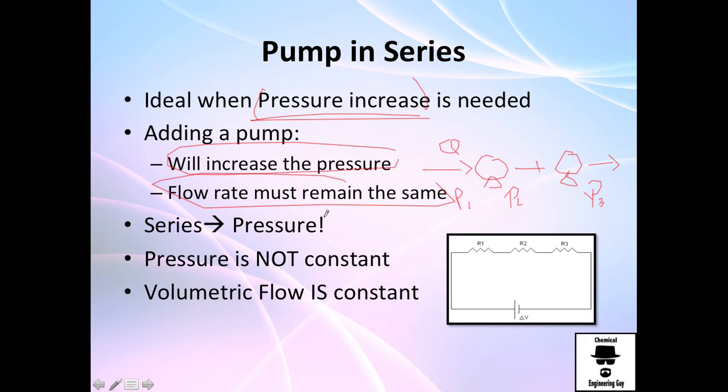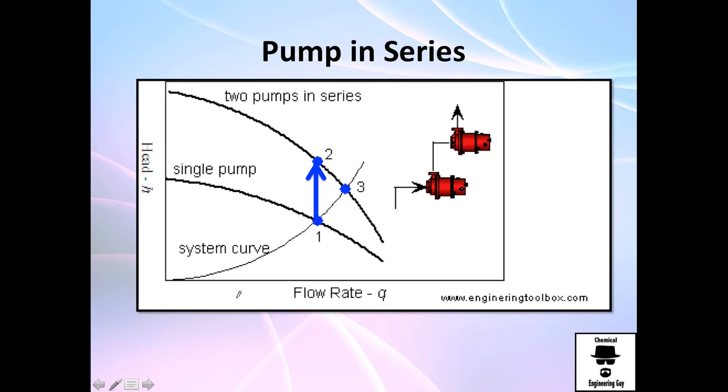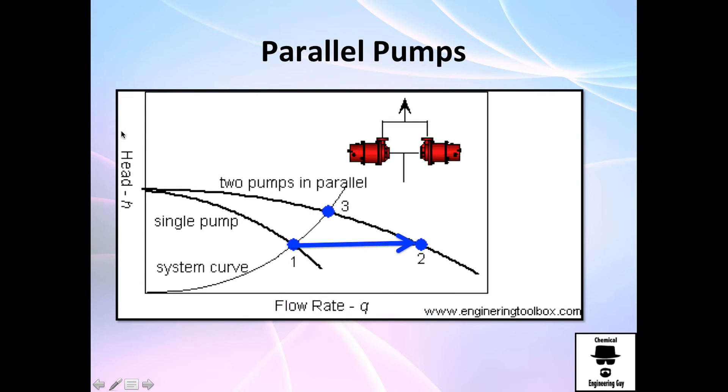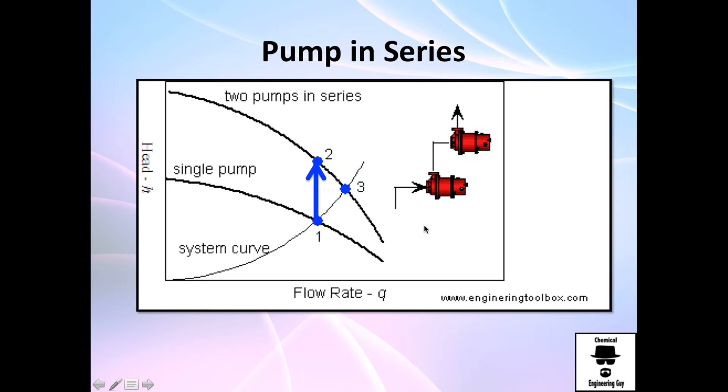So, when you arrange in series, you are looking out for a pressure increase. And then, what's going to happen is, you have your system curve here, and this is the single pump. This will be the normal operation, but when you add another in series, so you have these pumps, what you are going to do is increase the head. Previously, we were increasing the flow rate, now we are increasing the head of the system.